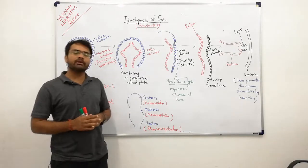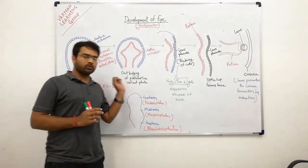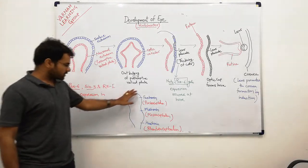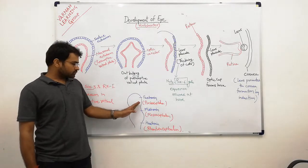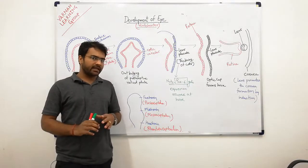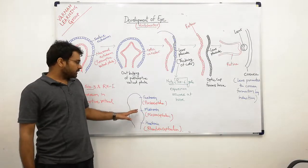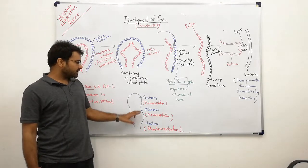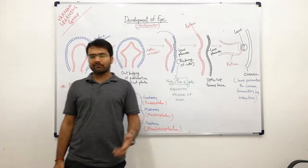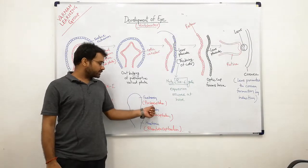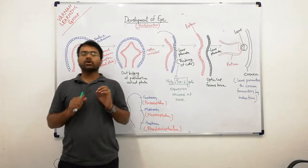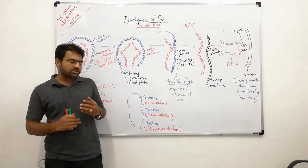The vertebrate brain or nervous system is divided into three portions: forebrain (prosencephalon), midbrain (mesencephalon), and hindbrain (rhombencephalon). The eye development starts from the forebrain portion, which is the prosencephalon. The key structures involved are the surface ectoderm and neuronal ectoderm.